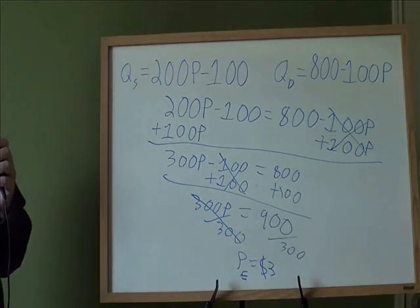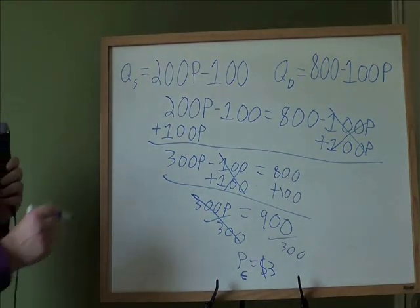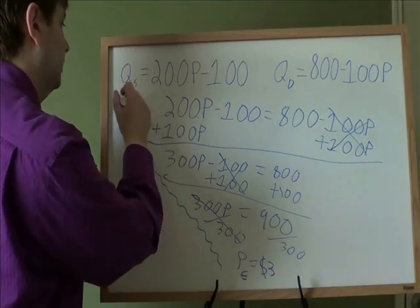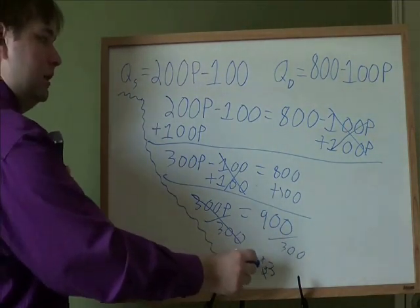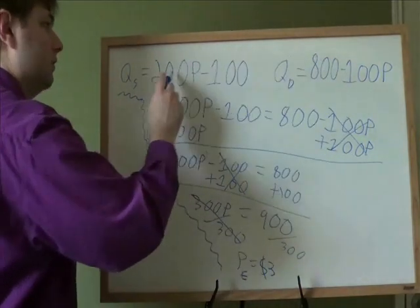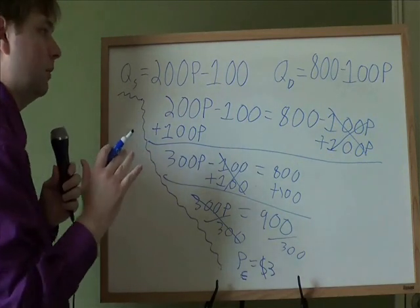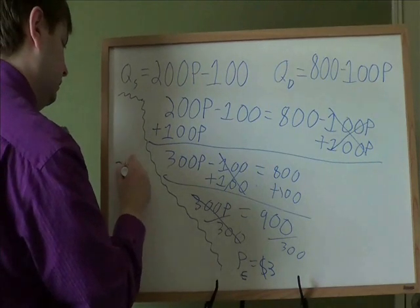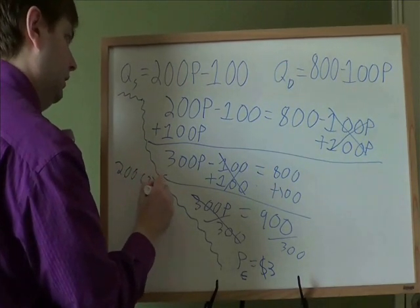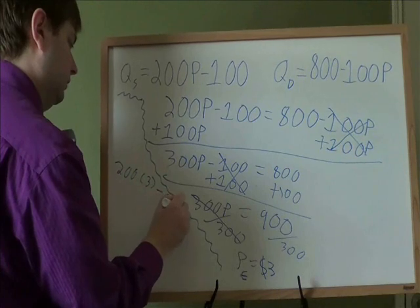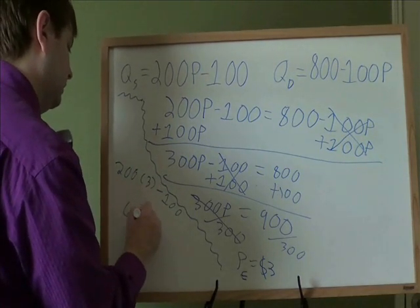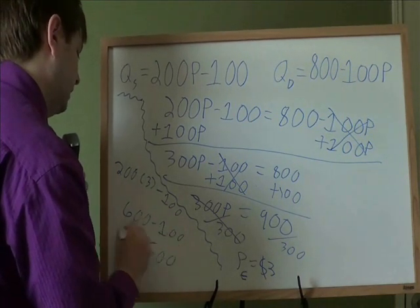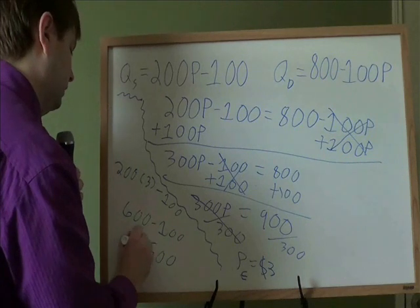Of course, that's just the price. We still need to get the equilibrium quantity. But that's not too bad to do. We get the equilibrium quantity by taking that price and plugging it into either of those two formulas. Doesn't matter which one because they will both give you the same quantity. That's what made it the equilibrium. So we'll just do this one here. 200 times 3 minus 100. 200 times 3 is 600. 600 minus 100 is 500. That is the equilibrium quantity, Qe.